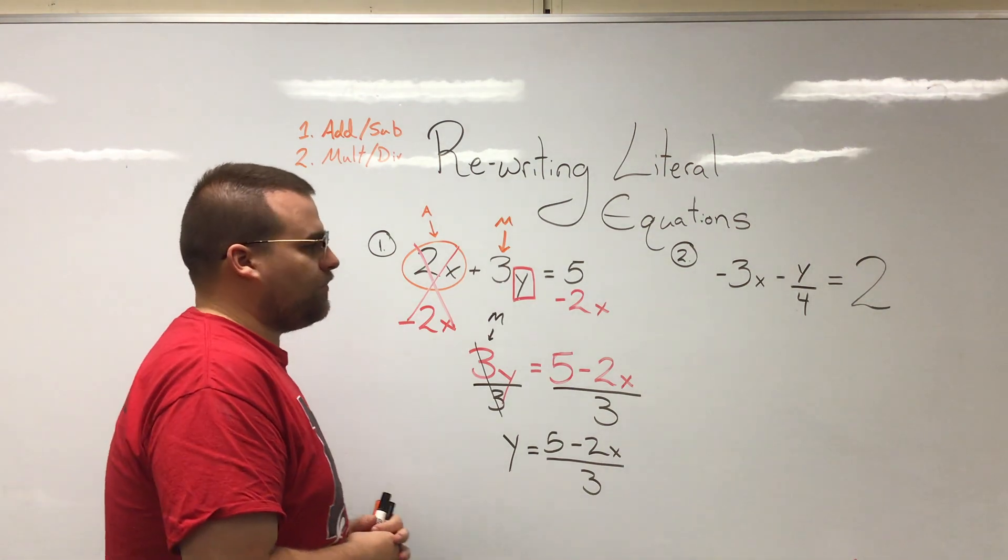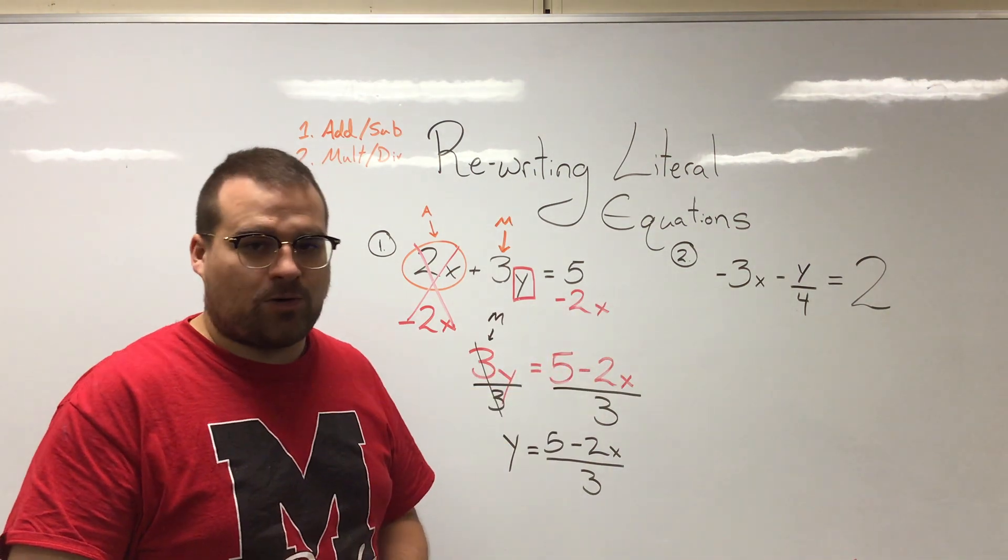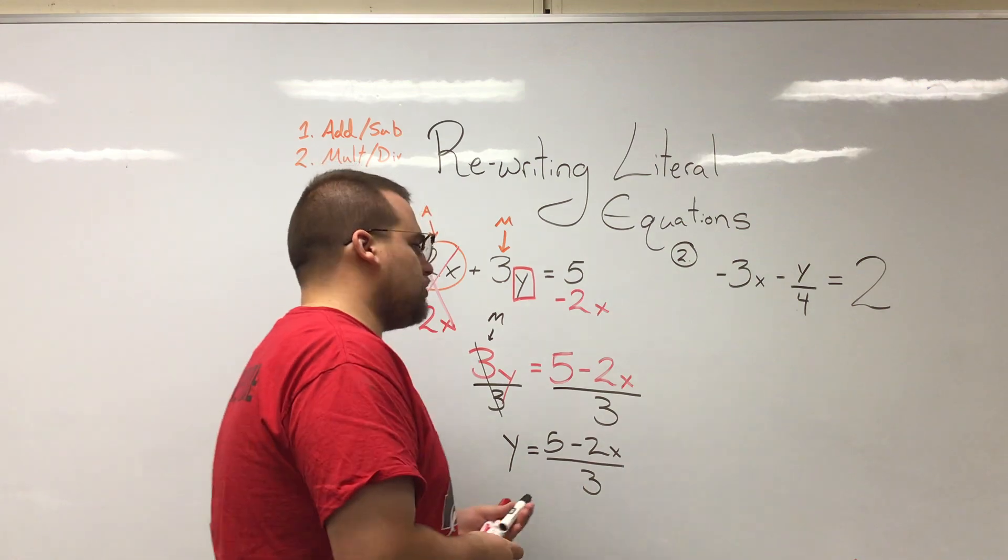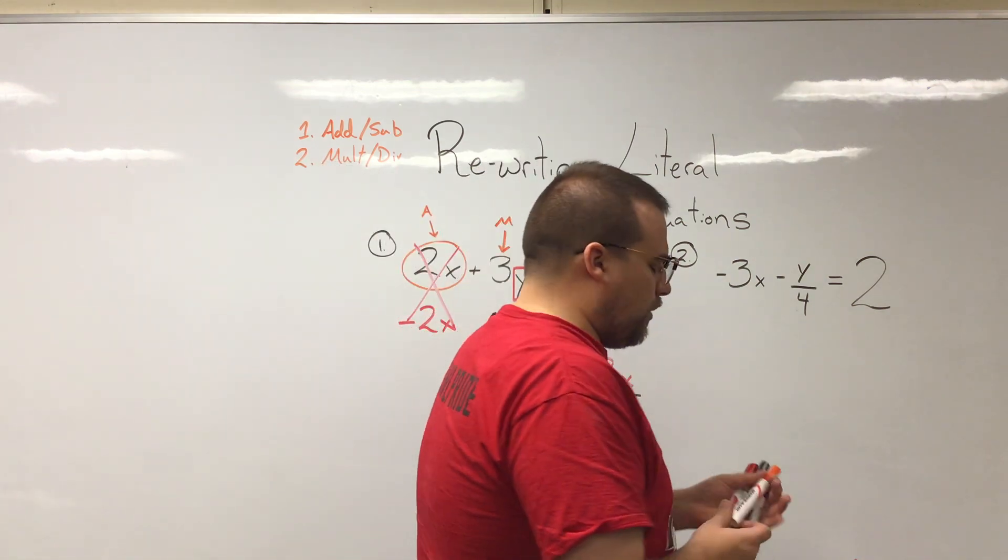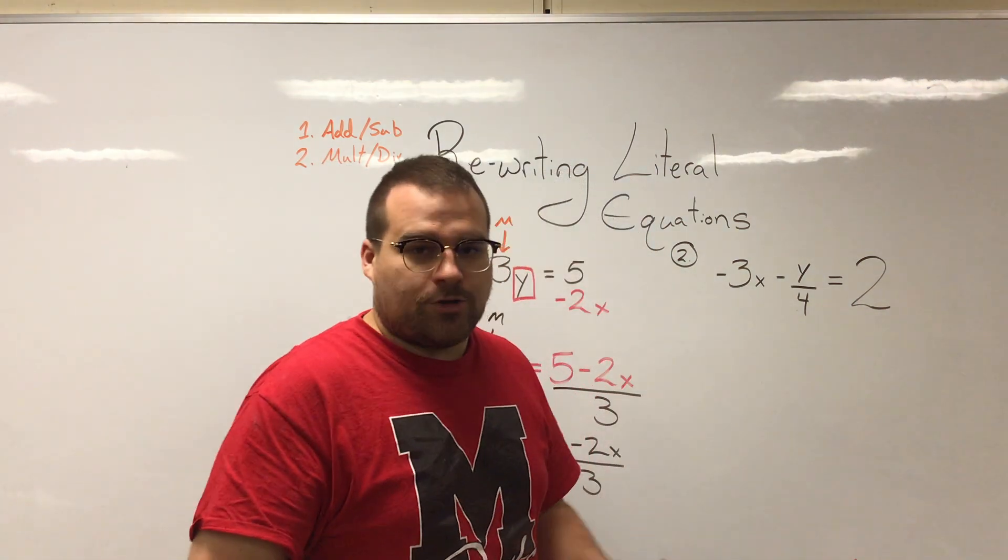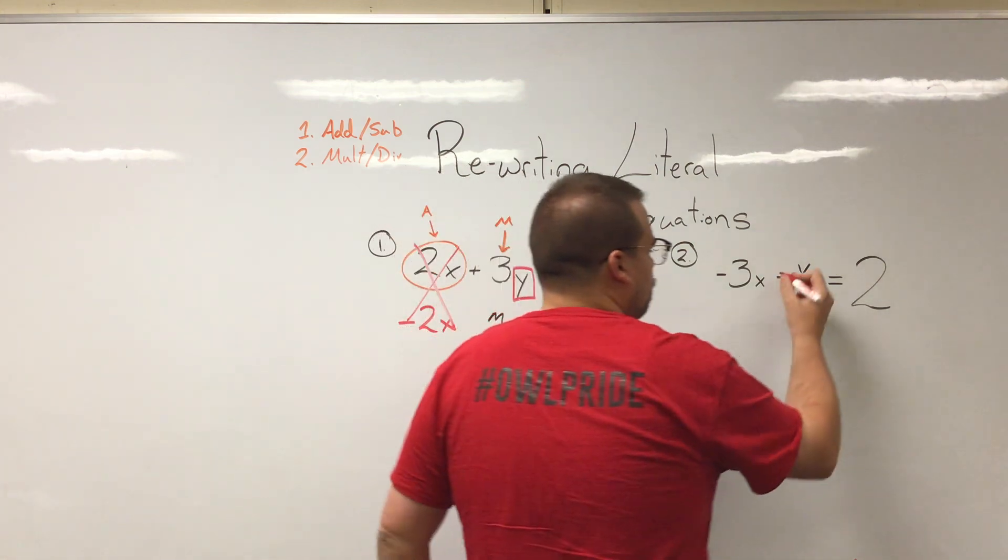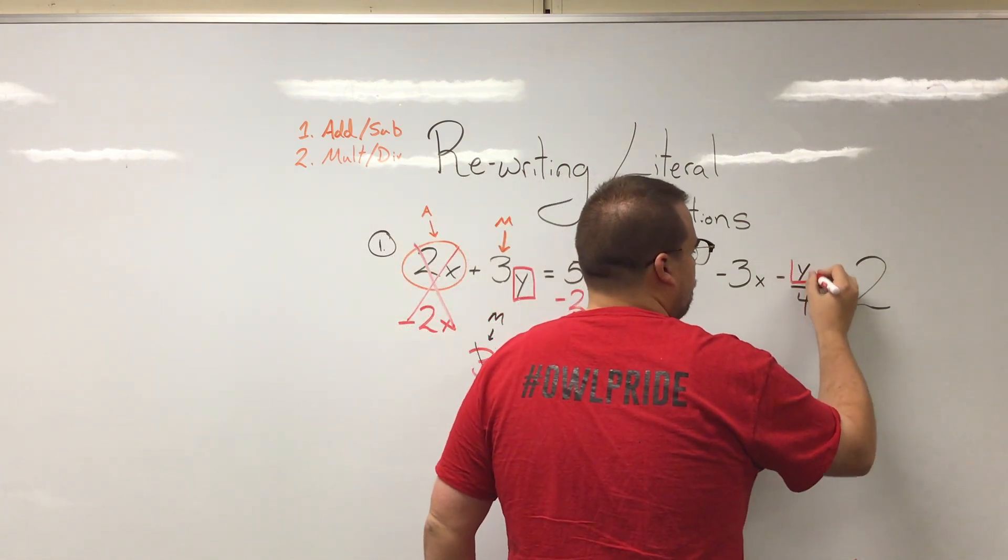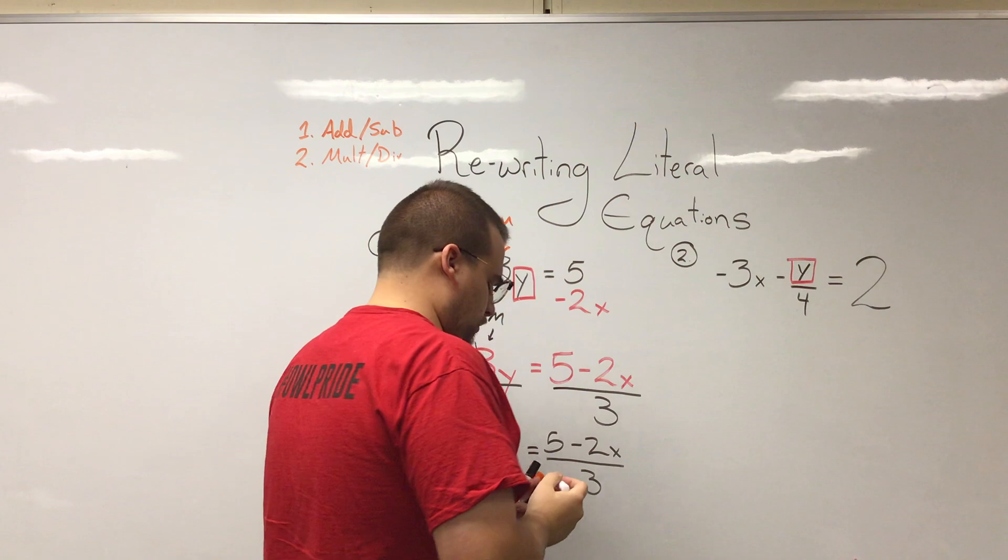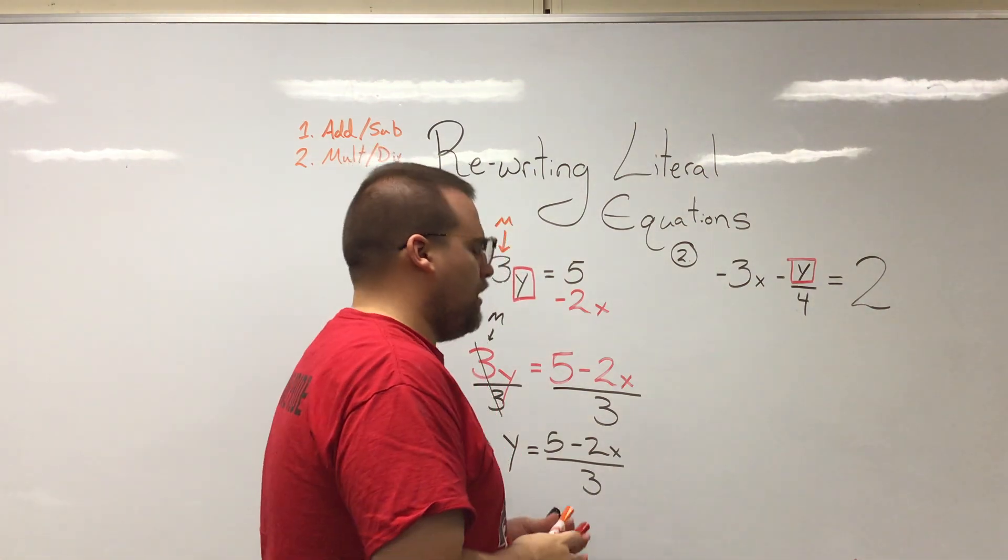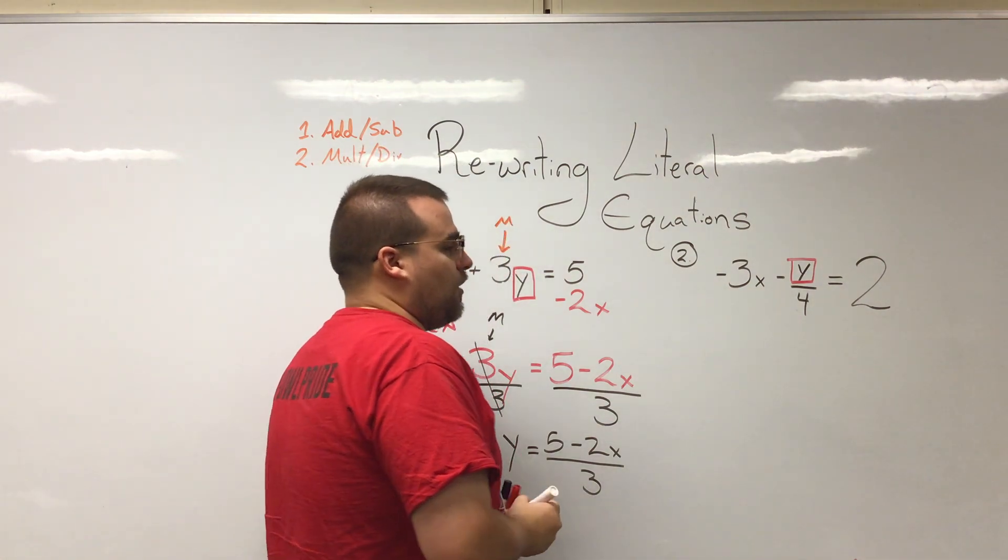Let's take a look at our second problem here. So we want to, let's say we still want to get y on its own. That's still our goal. I'm going to circle the y here or put a square around the y there and I'm going to look at what else is around the y.